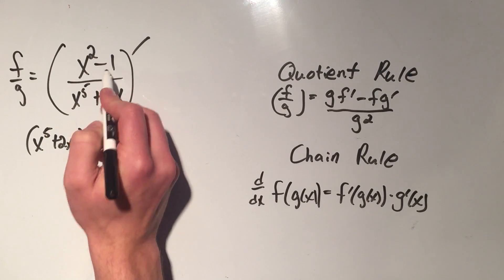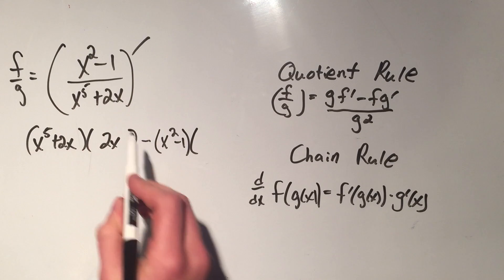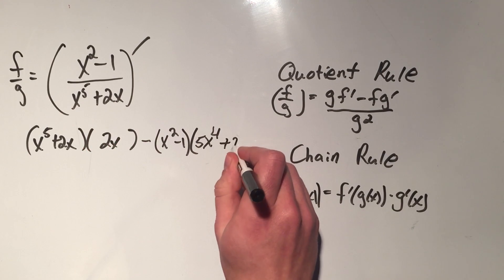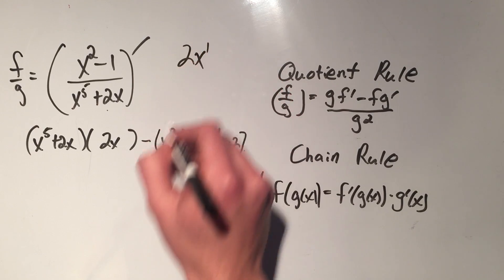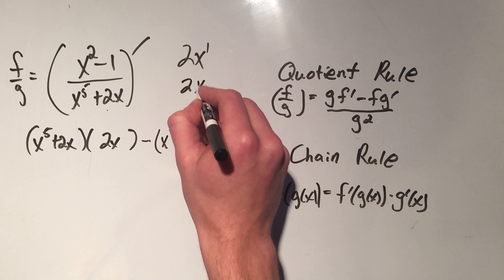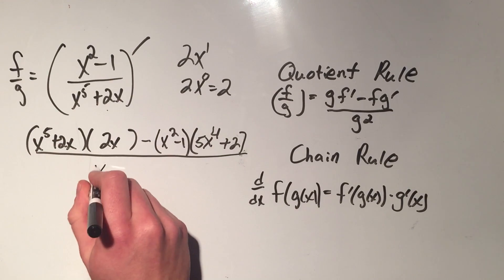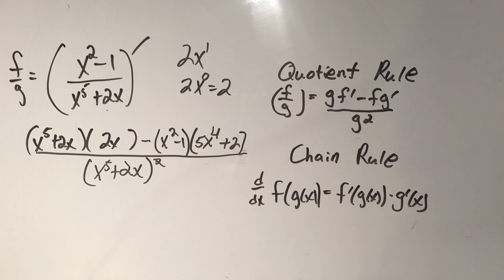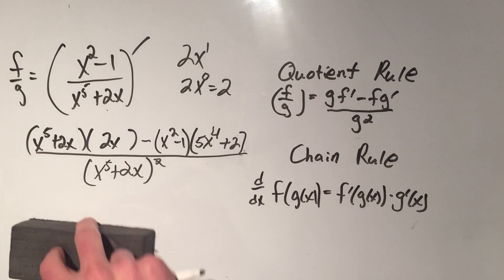The derivative of x squared is 2x, the derivative of minus 1 is 0. Then minus — put these in parentheses — minus high, that's x squared minus 1, times d low, the derivative of the low. x to the fifth's derivative by the power rule is 5x to the fourth. Plus 2x: the derivative of 2x is 2, because 2x to the first gives 2 times 1 is 2, and x to the 0 is 1. Then low d high minus high d low over low squared. You could simplify this, distribute and combine like terms, but I'm just showing you how to take the derivative using the quotient rule.